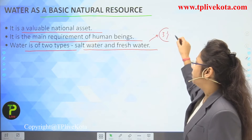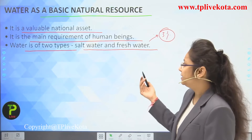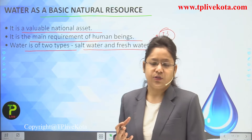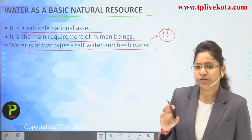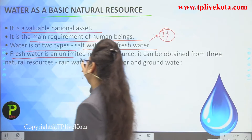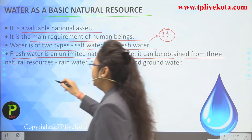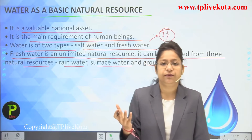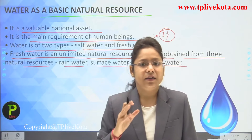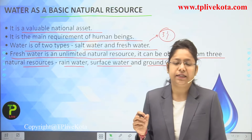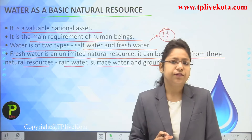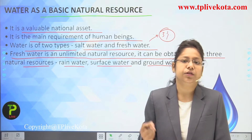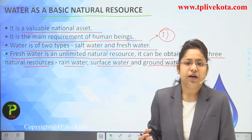Salty water is converted to potable water by desalination or reverse osmosis. Fresh water can be obtained from three natural sources: rain water, surface water, and ground water. Rainfall collects in dams and rivers. Surface water is available directly, and ground water is extracted using wells and motors. Human intervention pollutes water and changes its availability in various regions.